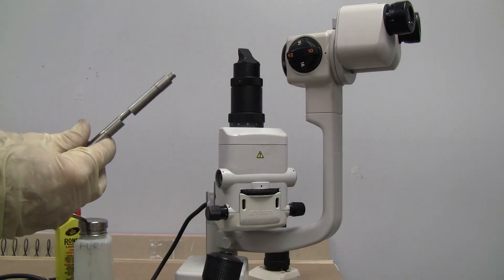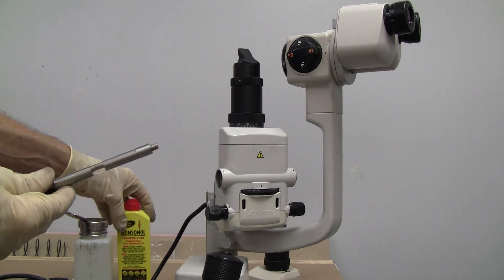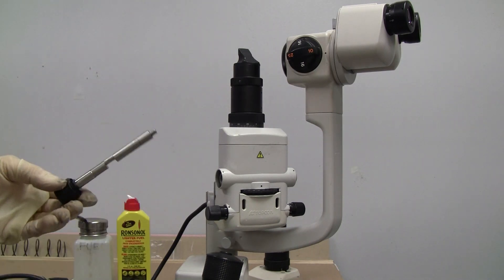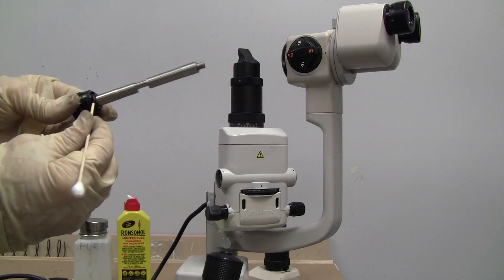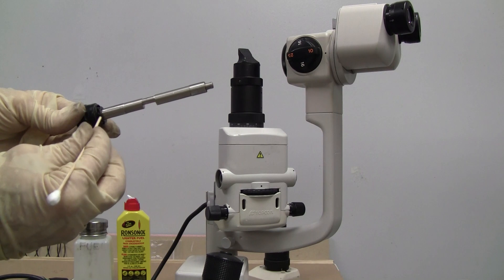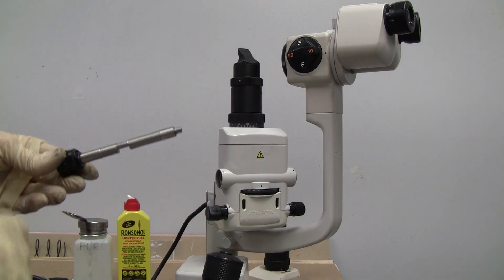Okay, I've cleaned the shaft with some fuel. And notice that there are three washers on this end. There's a flat washer, a wave washer, and another flat washer. Very thin.